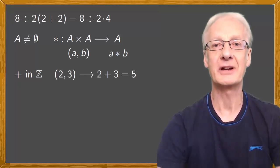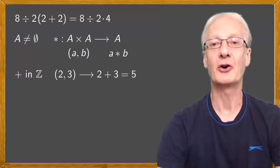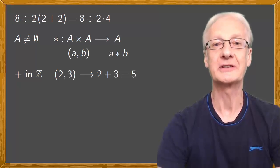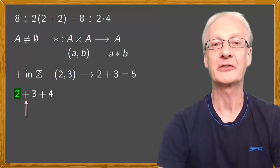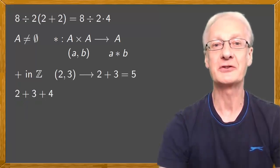Now, an operation is binary, which means we operate on only two elements at a time. So in principle, 2 plus 3 plus 4 makes no sense, because we have two options. Find the sum of 2 and 3 and then add 4, or add 2 to the sum of 3 and 4.